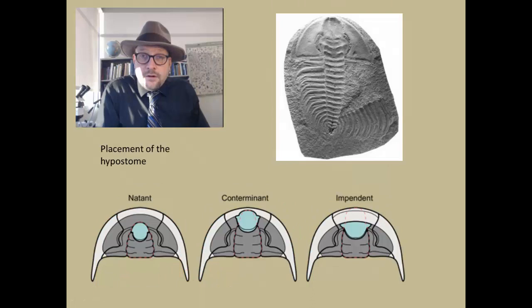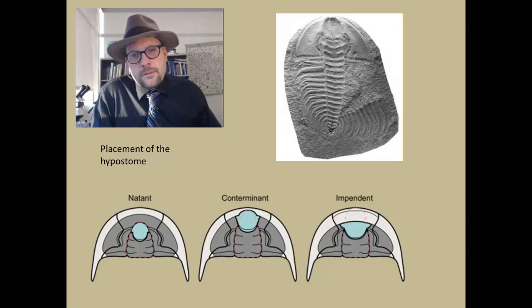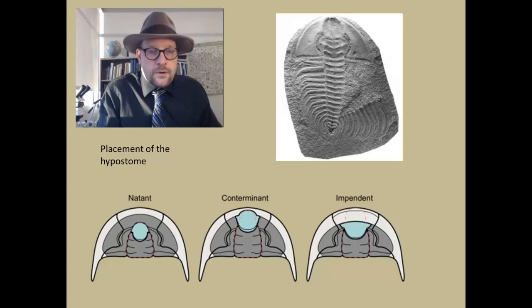Alright, so let's look at another character, and this is the placement of the hypostome on the ventral surface, so this is on the bottom surface of the trilobite. We've got the natant condition—this is where the hypostome does not contact the margin of the cephalon there. We have the conterminant condition, in which it does contact the lateral margin, and then we've got the impendent, in which the lateral margin is outgrown—it contacts it, but it is greatly expanded.